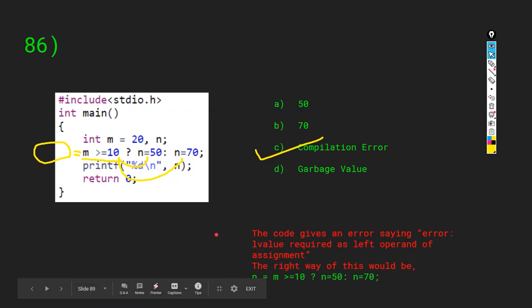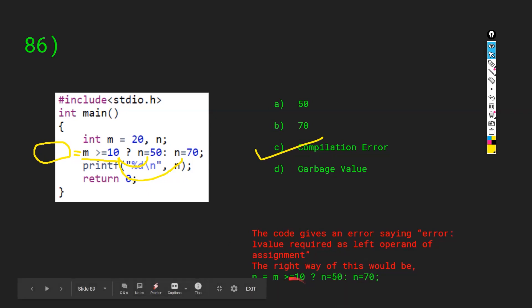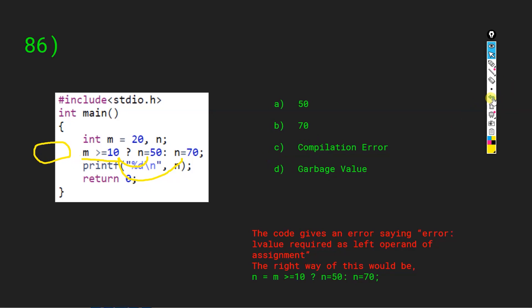When I run this code, the exact error is 'value required as left-hand operator of the assignment.' The right way is: n equals m greater than or equal to 10 ? ... Always remember when dealing with the ternary operator, an assignment is expected on the left-hand side — if you do not see an assignment, it is an error.